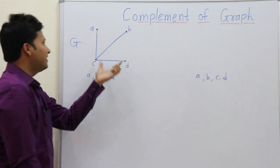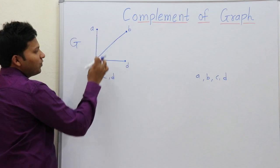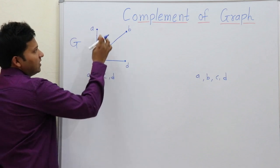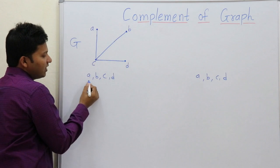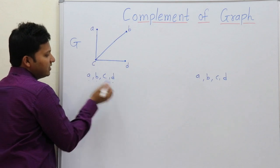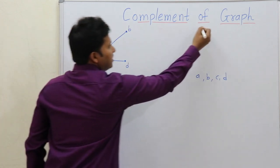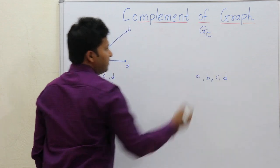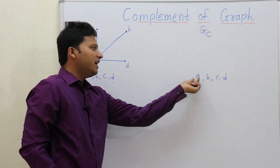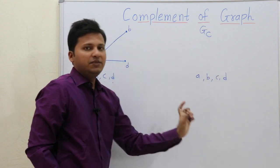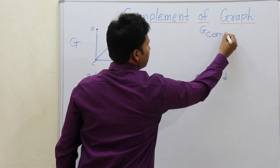So see here, this is the graph and in this graph there are four vertices: A, B, C, and D. These vertices are written here: A, B, C, D. Now in the complement of the graph there will be the same vertices, that is A, B, C, and D. So this is for the complement graph.